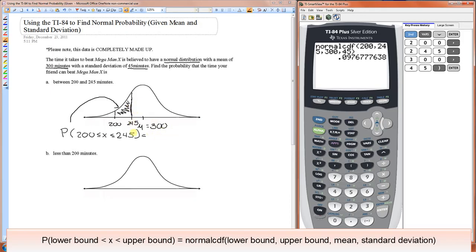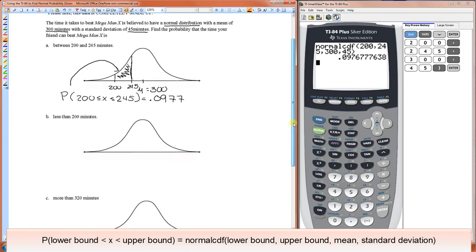So the probability that X is between 200 and 245 is 0.0977. The next one is the probability that it took him less than 200 minutes to beat it. So what we're looking for here is probability that X is less than 200.